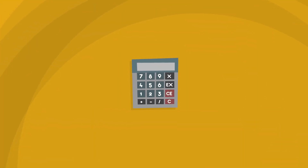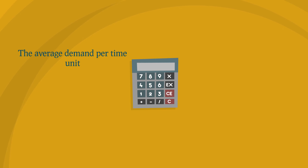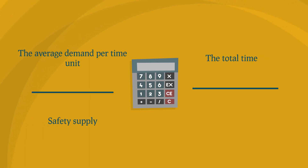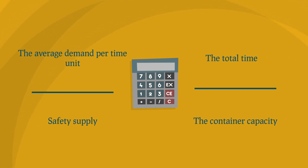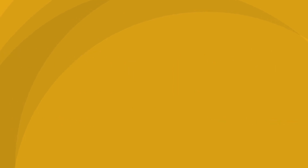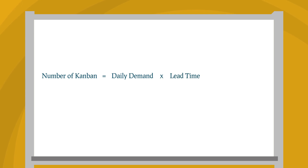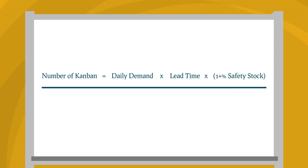The number of required Kanbans is a function of: the average demand per time unit (usually per day), the total lead time, the safety supply, and the container capacity. The formula is: Number of Kanbans = (daily demand × lead time in days × (1 + safety stock percentage)) ÷ quantity per container.